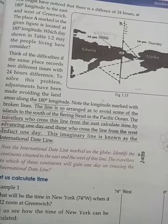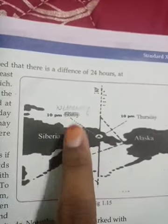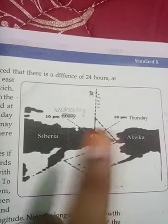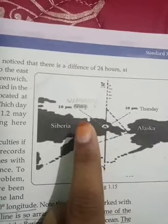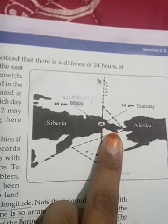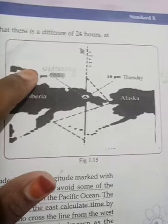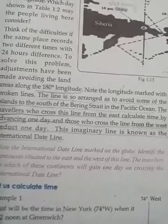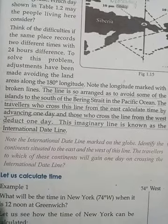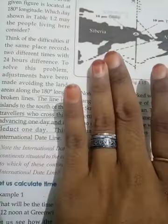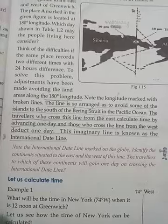Travelers who cross this line from east calculate time by advancing one day, and those who cross the line from west deduct one day. This imaginary line is known as the international date line.